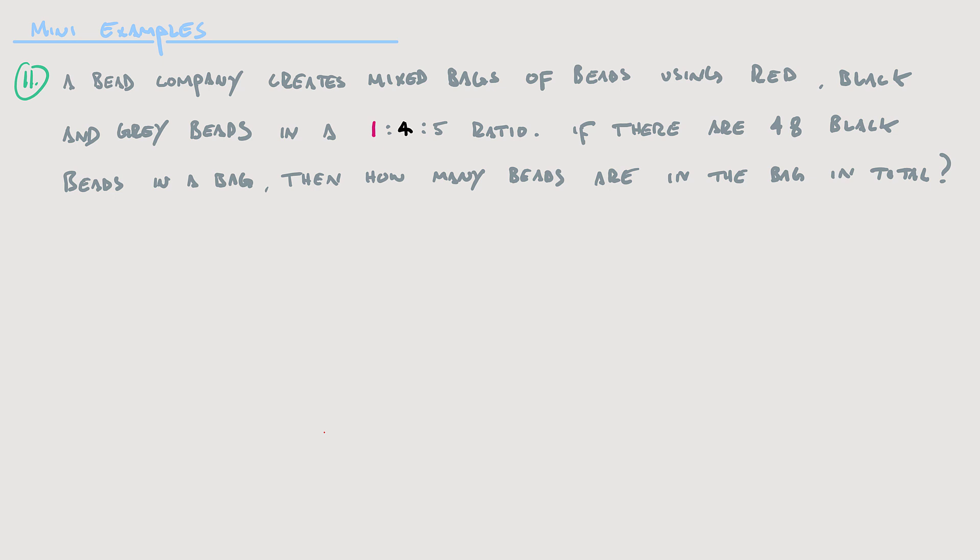Example two: a bead company creates mixed bags of beads using red, black, and gray beads in a 1 to 4 to 5 ratio. If there are 48 black beads in a bag, how many beads are in the bag in total? A ratio comparing three things is fine. The ratio 1 to 4 to 5 can be broken into sub-ratios: 1 to 4, 4 to 5, and 1 to 5 — plus all their reverses.